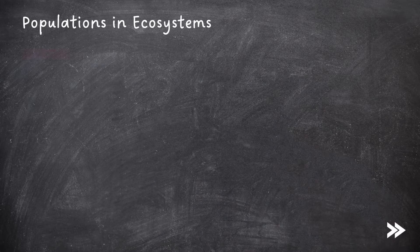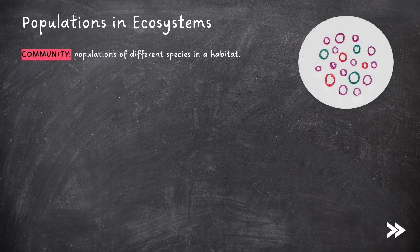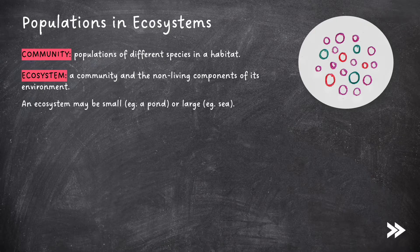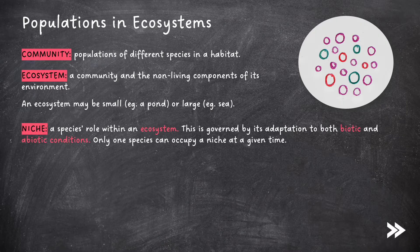A community is populations of different species in a habitat. An ecosystem is a community and the non-living components of its environment. An ecosystem may be small, such as a pond, or large, such as the sea. A niche is a species' role within an ecosystem, and is governed by its adaptation to both biotic and abiotic conditions.